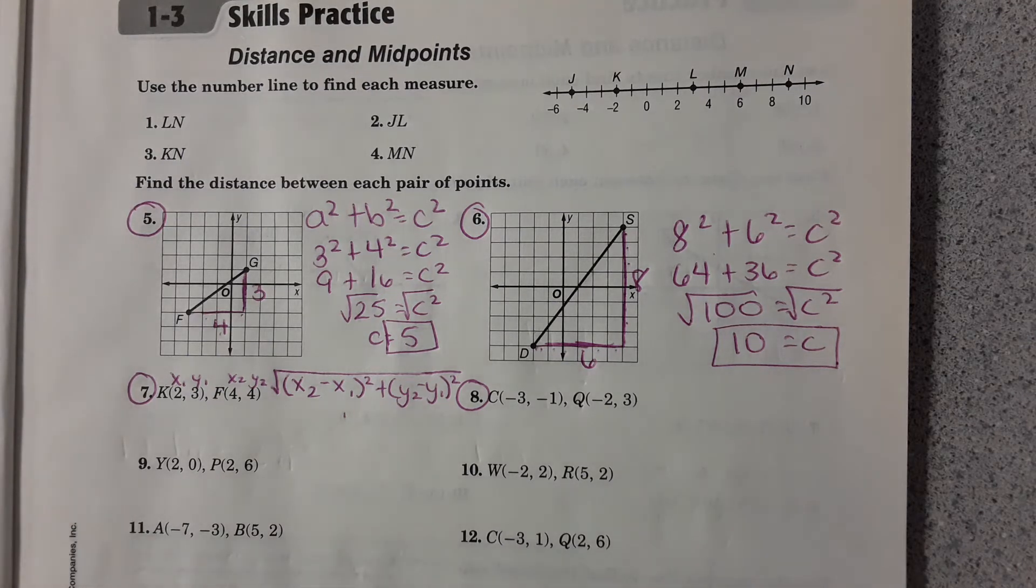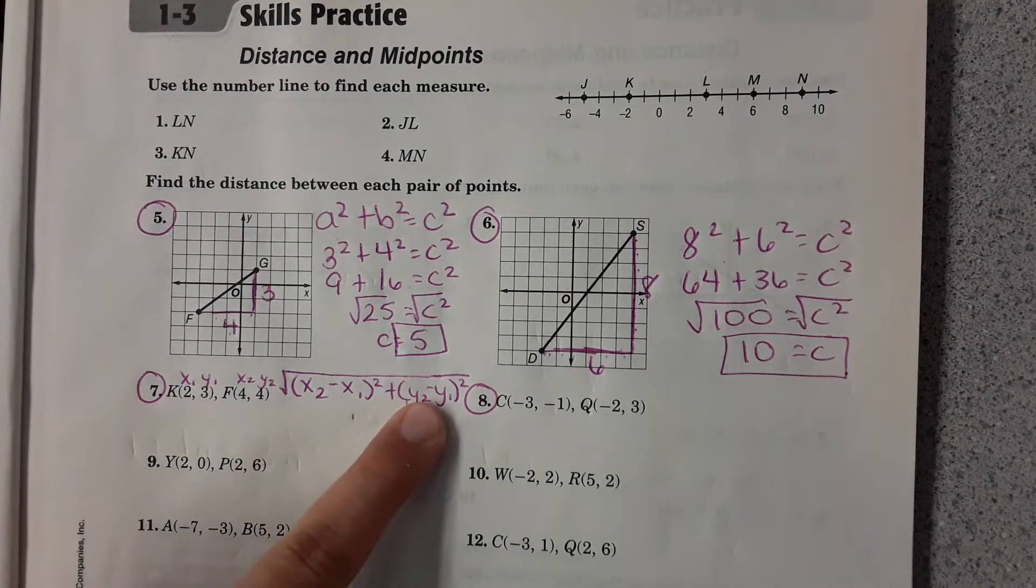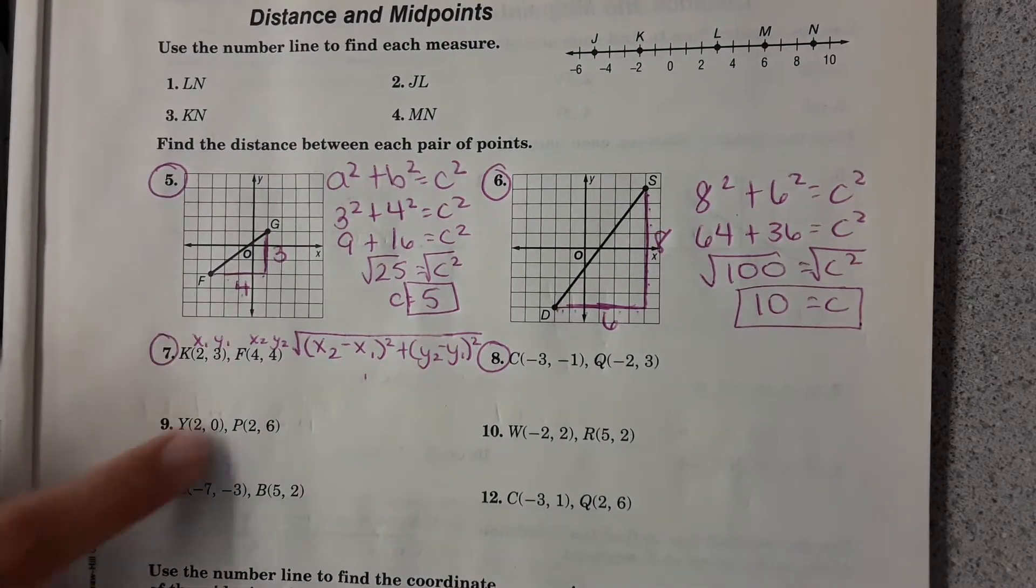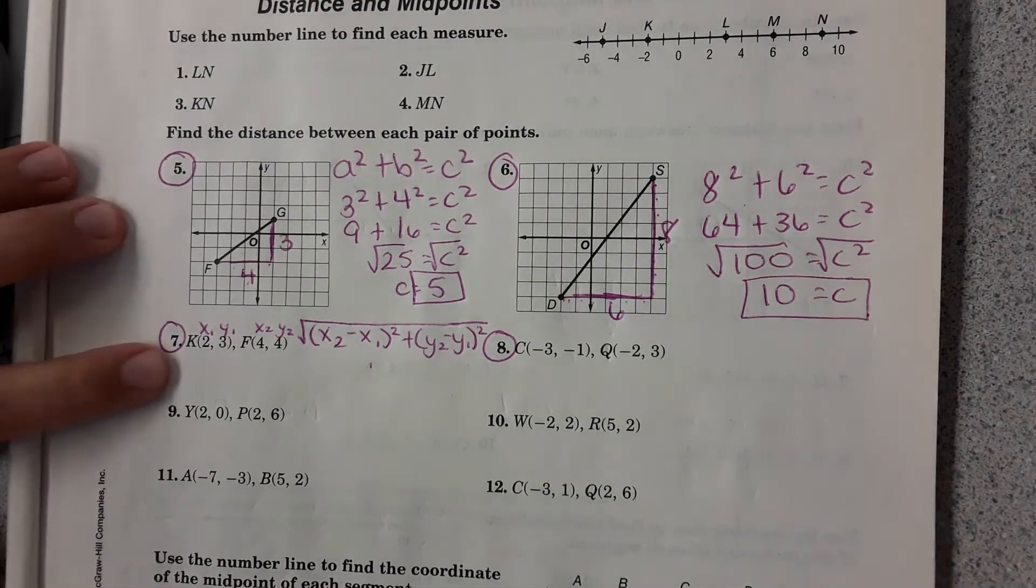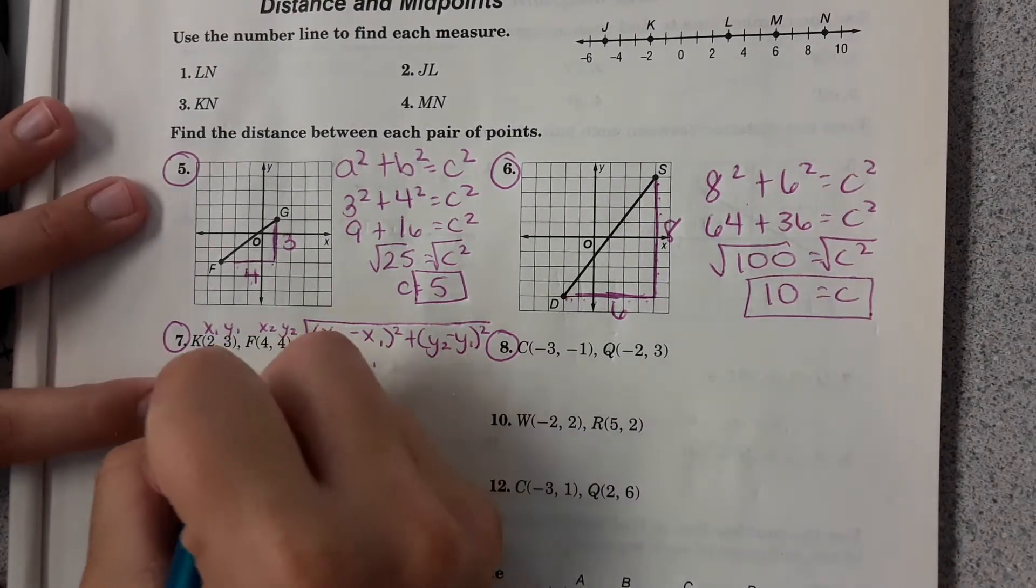And then 7, when they give you the two points like this, it's easier to use distance formula and just plug in the numbers into the equation. So that's what we're going to do here.